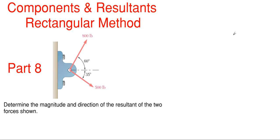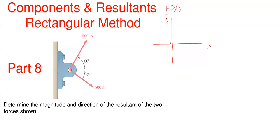In utilizing the rectangular method, what we're going to do is draw a free body diagram first. This free body diagram is going to be really simplistic because we only have two forces. When utilizing the free body diagram, we have to set up an x-y coordinate system. There's my x and there's my y. My origin point will be the center where all the forces collide, which is right there at the center of the bracket.